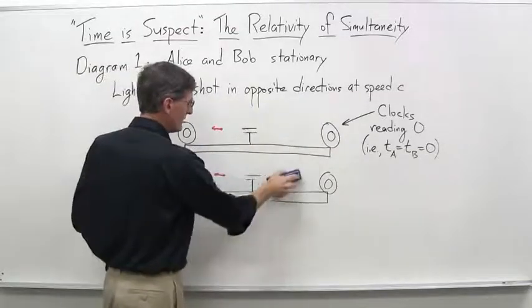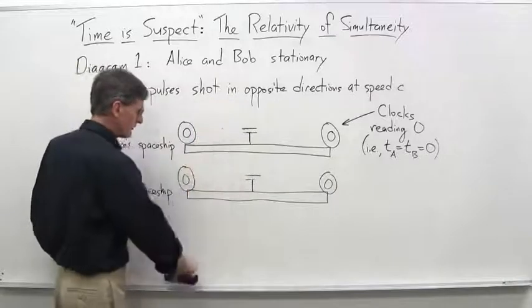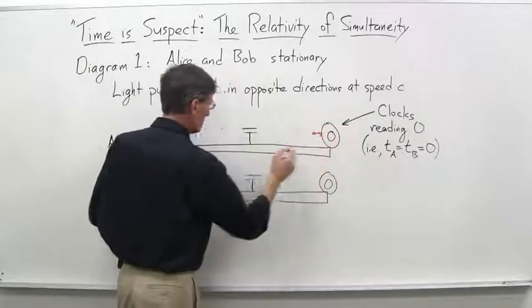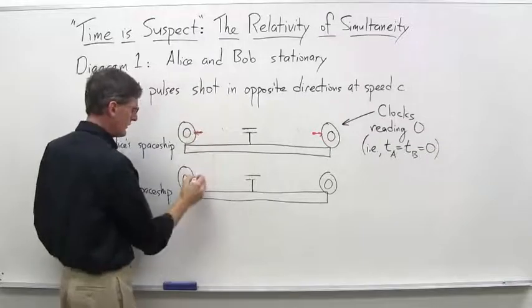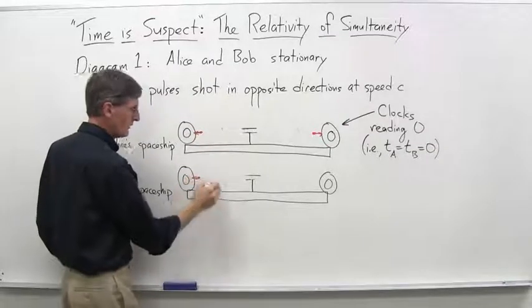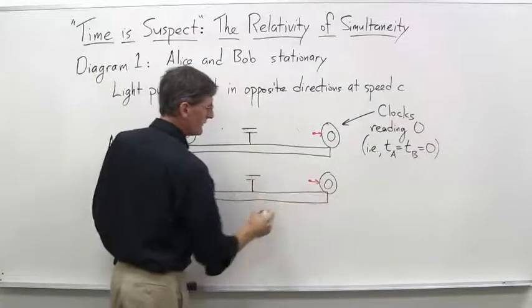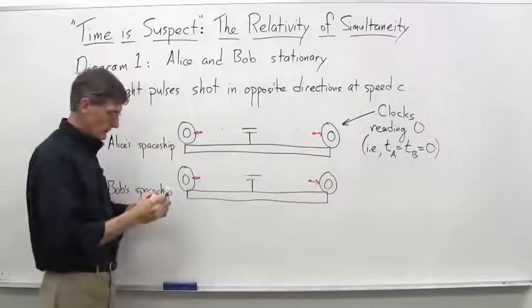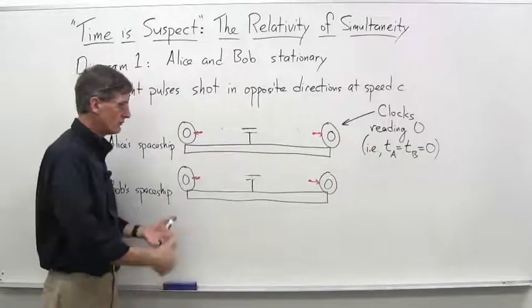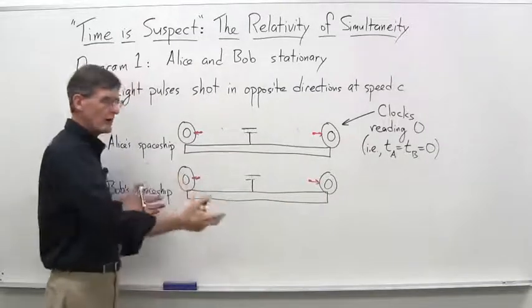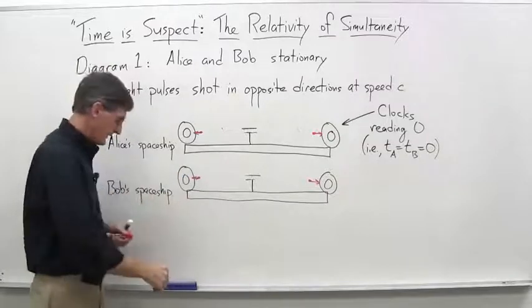So we'll draw that in here next. We'll assume they've actually reached the end here. This one has reached there, this one has reached there, and this one has reached there. Clearly, everything is symmetrical. Nobody's moving. The light clocks all trigger at the same time.